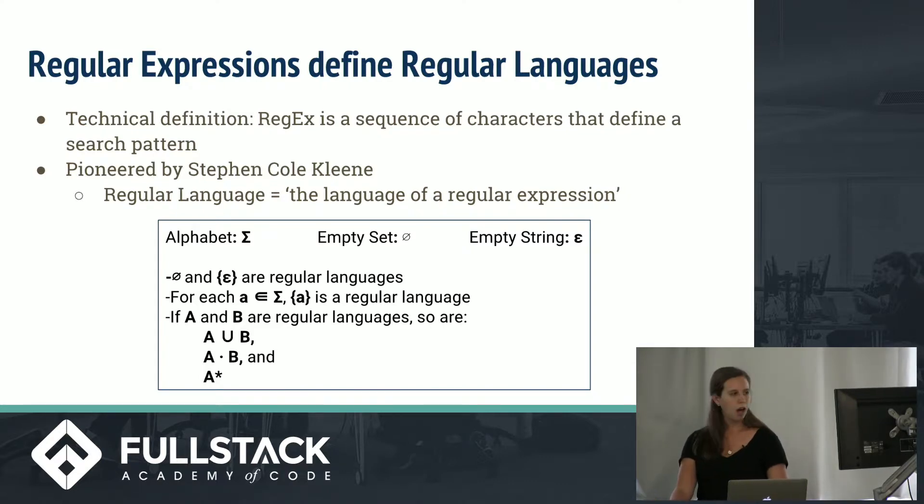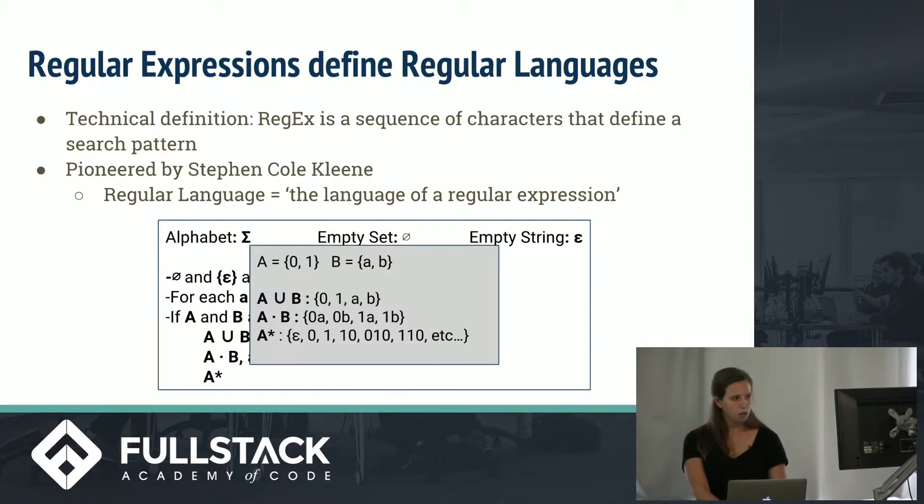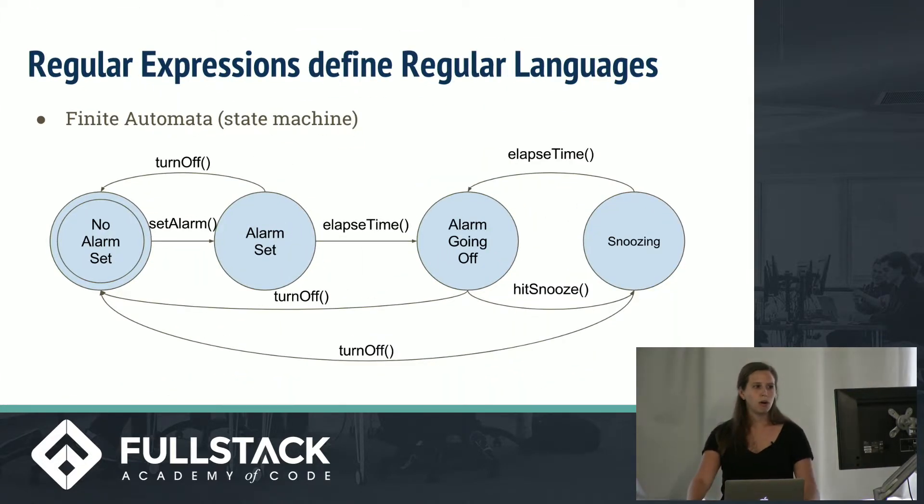So in the same way that regular expressions define a search pattern, a regular language is the language of a regular expression. And this probably doesn't make much sense to you now, but I hope it will soon. If we have an alphabet sigma, as well as the empty set and epsilon, which is the empty string, both epsilon and the empty set are regular languages. For each element in the alphabet, that element, the set containing that element, is a regular language. And if sets A and B are regular languages, so are their unions and concatenations, as well as A star. So, for example, here we have two sets. That's their union concatenation and A star. Again, I'm not going to get into the mathematical detail, but hopefully you'll recognize A star is actually the set of all binary numbers.